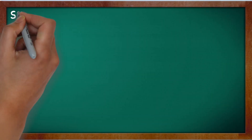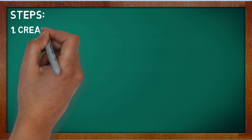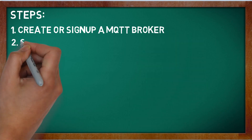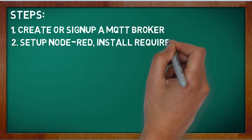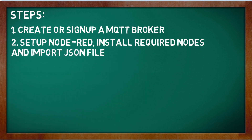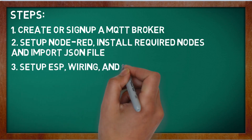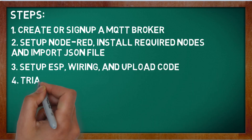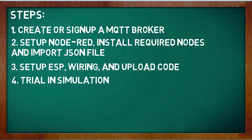Step-by-step implementation: Step 1 — create or sign up for a MQTT broker. Step 2 — set up Node-RED, install required nodes, and then import the JSON flows file. Step 3 — set up the ESP device: wire the device, edit the code, and upload the code. Step 4 — trial the implementation and make sure everything is running well.